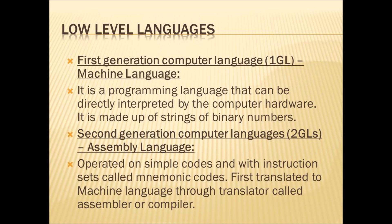Now we will see the computer languages. Languages are of two types: low-level and high-level. The first generation computers used machine-level language, also called 1GL. It is a programming language that can be directly interpreted by the computer hardware and is made up of strings of binary numbers — zeros and ones.